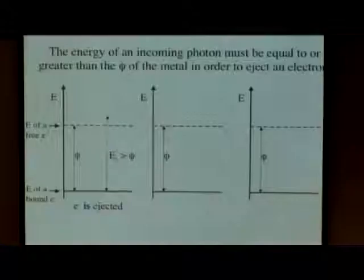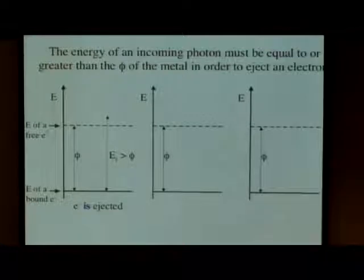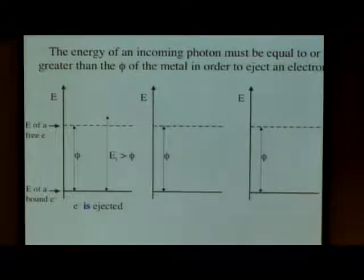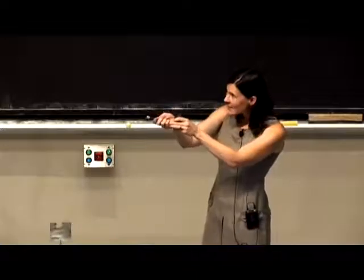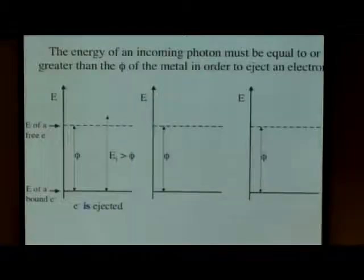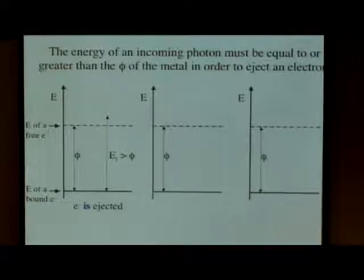The most basic case is where the incident energy coming in is greater than the work function. In that case, we have an electron that is ejected. The little extra bit of energy beyond the work function goes into the kinetic energy of the electron — that's how we can also graph figuring out the kinetic energy.